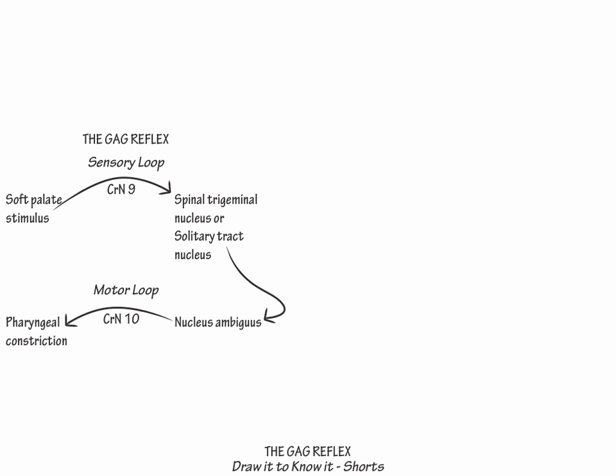as well show that nucleus ambiguous stimulates the trigeminal motor nucleus, cranial nerve 5 for jaw opening, and the hypoglossal nucleus, cranial nerve 12 for tongue thrust.